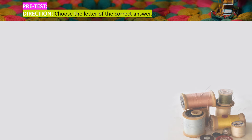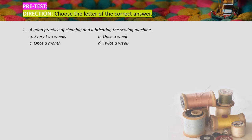Before we start our new lesson, let's have a pretest to check what you already know. Direction: choose the letter of the correct answer. Number one: a good practice of cleaning and lubricating the sewing machine is — A) every two weeks, B) once a week, C) once a month, D) twice a week. The correct answer is letter D, twice a week.